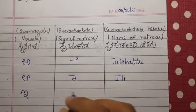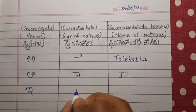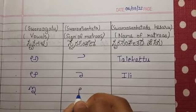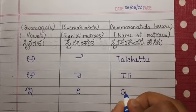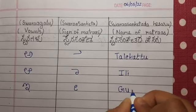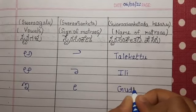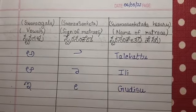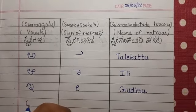EE is equals to Goodisu. Matra of E is Goodisu.